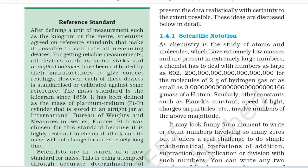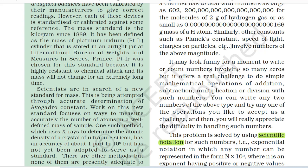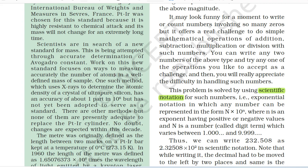1.4.1 Scientific Notation. As chemistry is the study of atoms and molecules which have extremely low masses and are present in extremely large numbers, a chemist has to deal with numbers as large as 6.022 × 10²³ for the molecules of 2 g of hydrogen gas or as small as 0.166 × 10⁻²⁴ g for the mass of a hydrogen atom. Similarly, other constants such as Planck's constant, speed of light, charges on particles, etc. involve numbers of the above magnitude. Simple mathematical operations of addition, subtraction, multiplication or division with such numbers offer a real challenge.